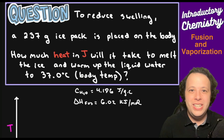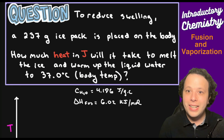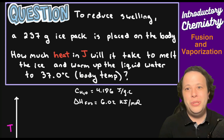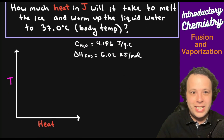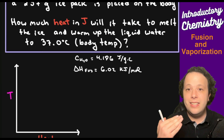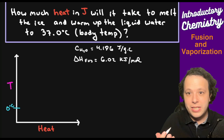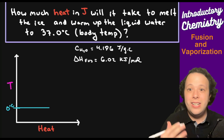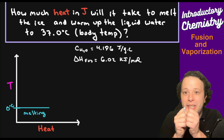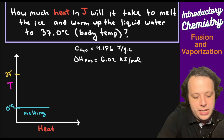Next problem: to reduce swelling, a 237-gram ice pack is placed on the body. How much heat in joules will it take to melt the ice and warm the liquid water to 37°C? This combines phase change and heating concepts. Looking at an energy diagram: at zero degrees C, there's a flat line for melting — it takes a lot of energy for the intermolecular forces to separate enough to become liquid. Then there's a slope showing heating up to 37°C.